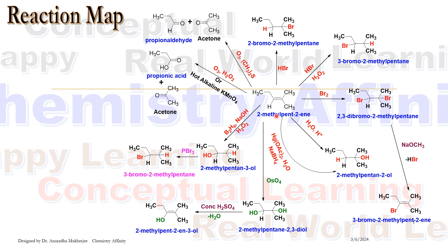Alkene can undergo oxidative cleavage of the double bond and this cleavage can be done by ozonolysis. When this alkene is treated with ozone followed by reductive workup, the C=C bond breaks and the right hand side moiety gives acetone and the left hand side moiety gives an aldehyde.